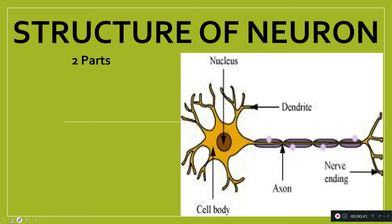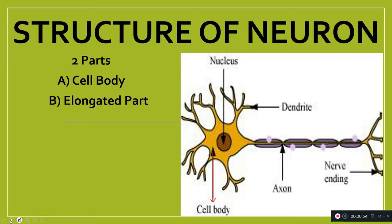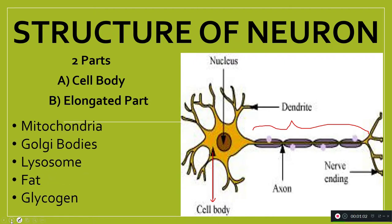The neuron is made up of two parts. The first part is the cell body — you can see this part here is the cell body. The other part is an elongated part. First I will start with the cell body.